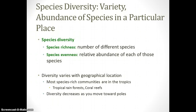Species diversity refers to the variety and abundance of species in a particular ecosystem, and it breaks into two categories. Species richness is simply how many different species there are — in our classroom we could count human beings, crickets, betta fish, and goldfish, each as a separate tick mark. Species evenness is about how abundant each of those species is; for example, humans are by far the most abundant, with about 30 people for every few fish.